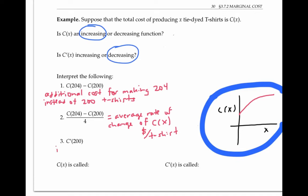C'(200) is the instantaneous rate of change of C(x). C(x) is known as the cost function, and C'(x) is called the marginal cost, which is the rate at which cost is increasing per additional t-shirt made.